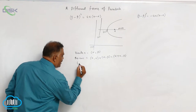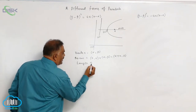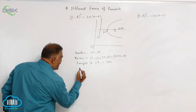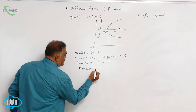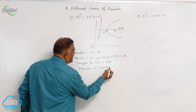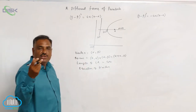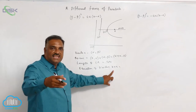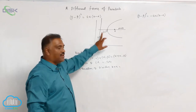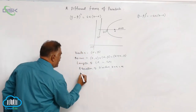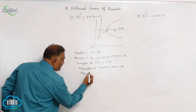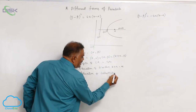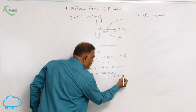Then comes length of latus rectum. Length of latus rectum, in any case, it is 4A only. Then, equation of directrix. Previously, equation of directrix is x + a = 0. Now, it is x + a = α, since whenever the x term is there, it increases by the x-coordinate of the new origin, that is α. Then, equation of latus rectum is given by x minus a = α.